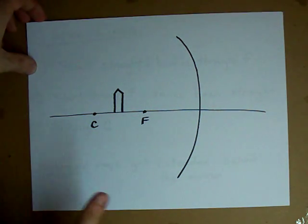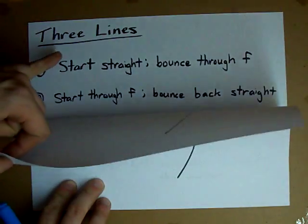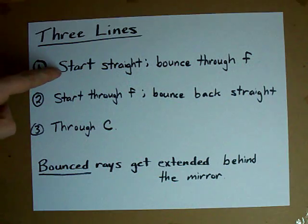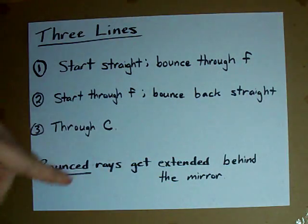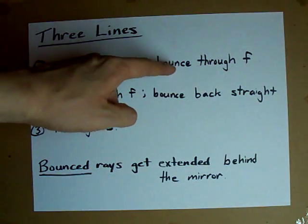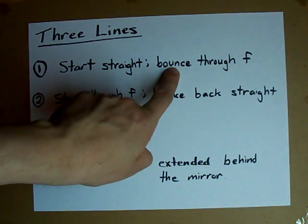To do it though, it's the same rules every single time. There are three lines that I want you to draw. The first, I want you to start out going straight or parallel to the horizontal line, and then once it hits the mirror, I want you to bounce through F.